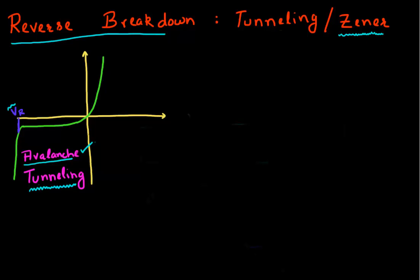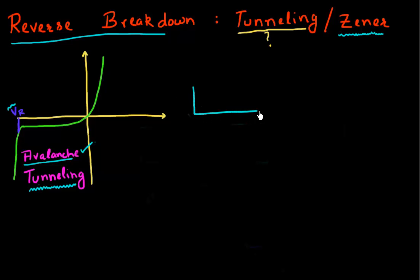So how does this tunneling work? It sounds like a term somebody trying to escape from a prison might use. Let me explain that using a band diagram in a p-n junction. So let's assume I have a p-n junction.